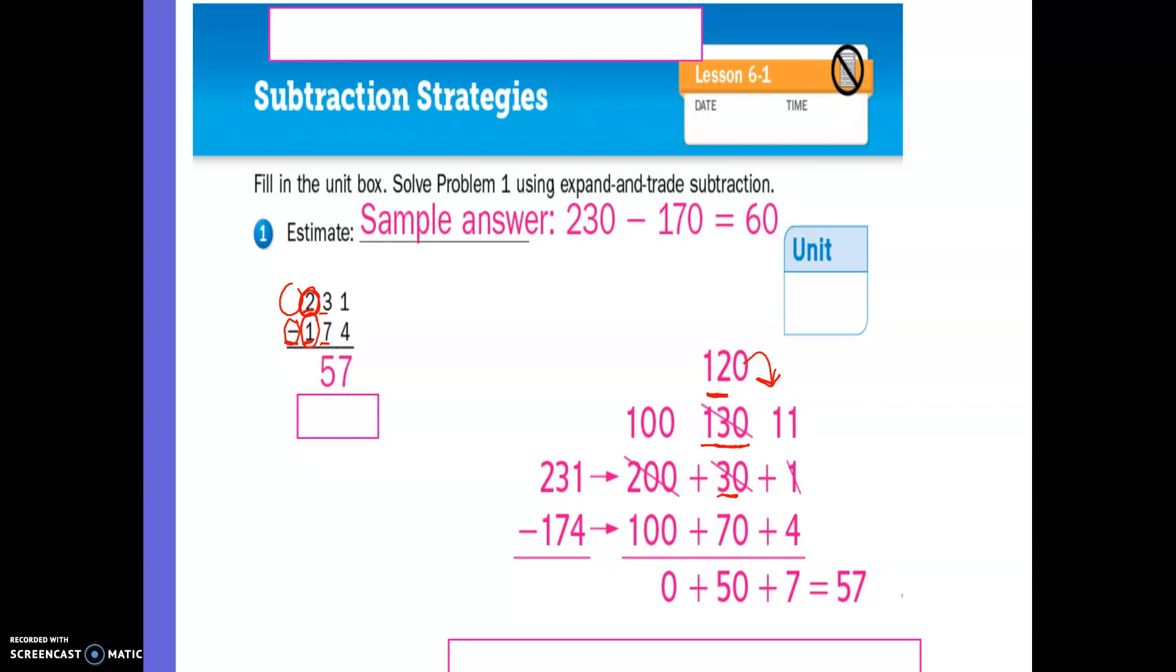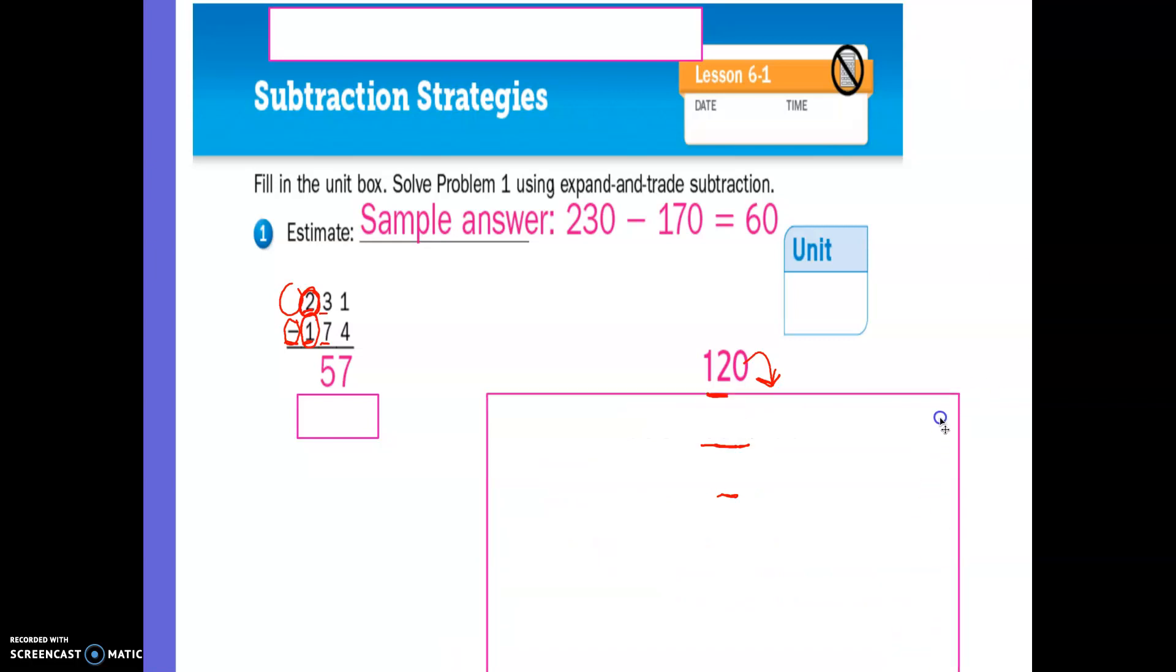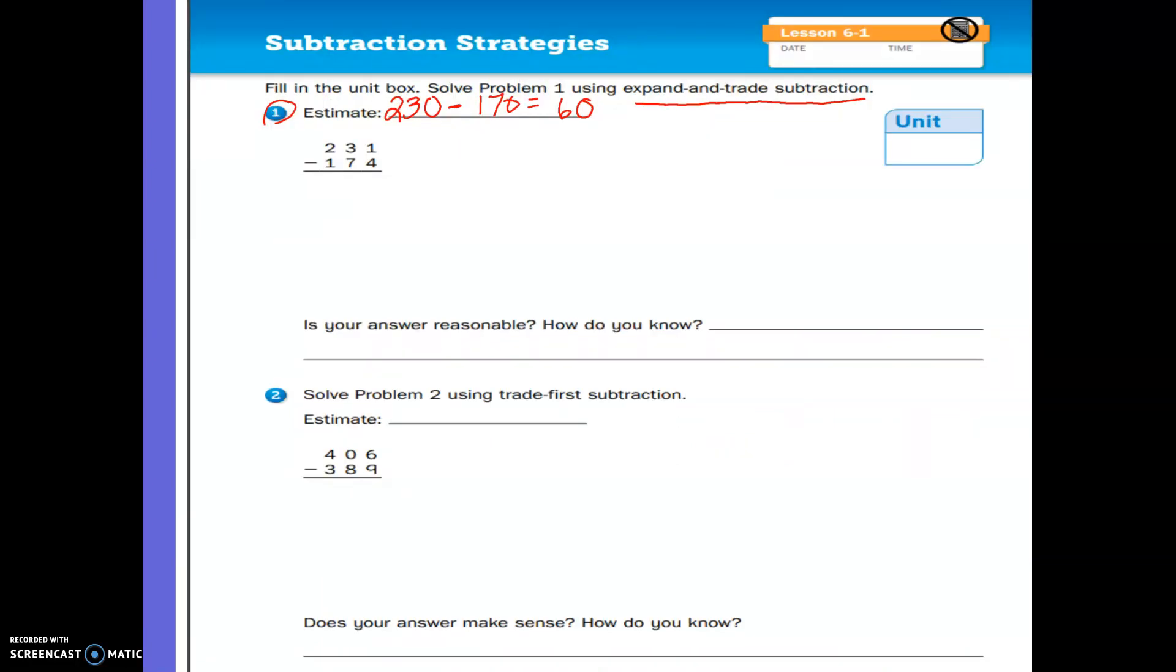Okay? Now, at the bottom of your page is a question that says, does this make sense? Does your answer make sense? Well, we could make an estimate. Well, we did make an estimate. And our estimate was 60. And doing all the work from the other page, we found that the answer is going to be 57. So is my answer reasonable? Yes. It is because it is close to my estimate. So that's one way that I know my answer is reasonable, because it's close to my estimate.